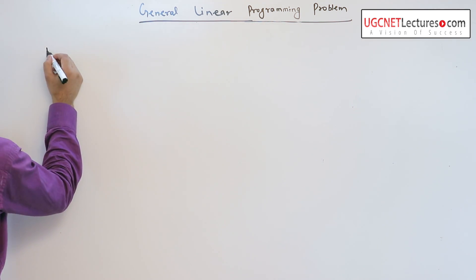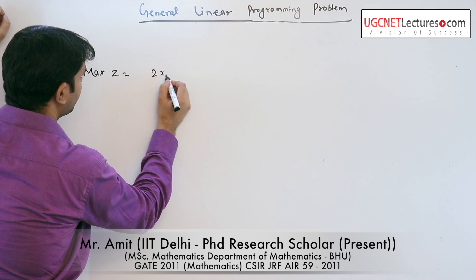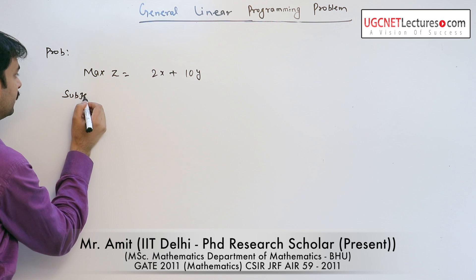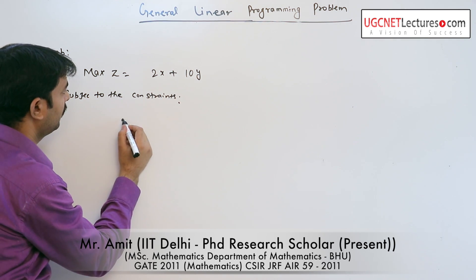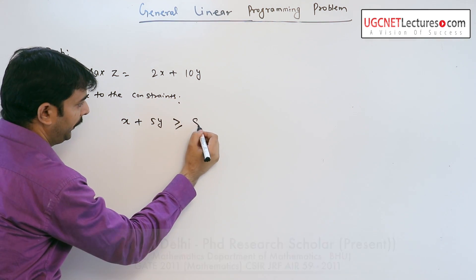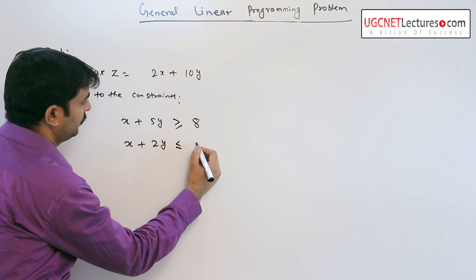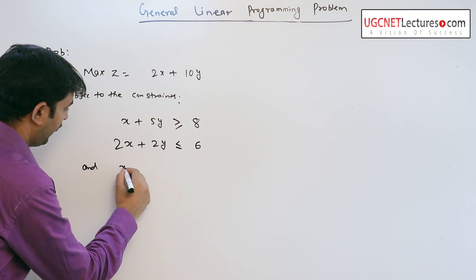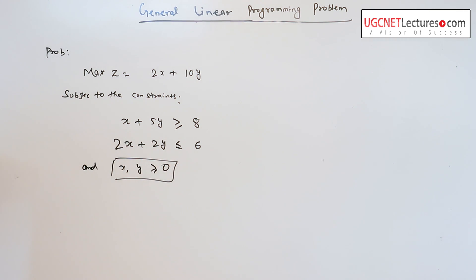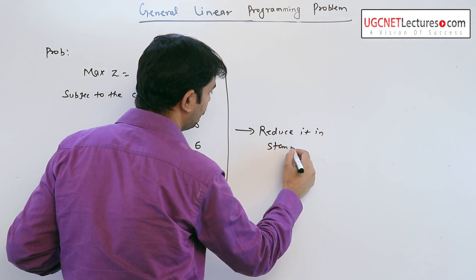In general linear programming, consider another problem: the maximization of z is equal to 2x plus 10y, subject to the constraints. The first is x plus 5y is greater than or equal to 8, the second is x plus 2y is less than or equal to 6, and x and y are non-negative. Now, how do we reduce this problem to its standard form?